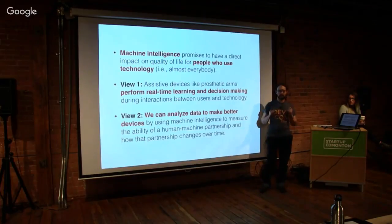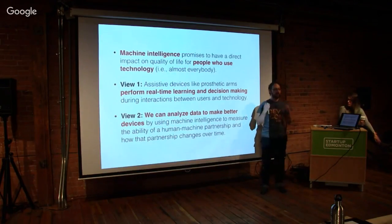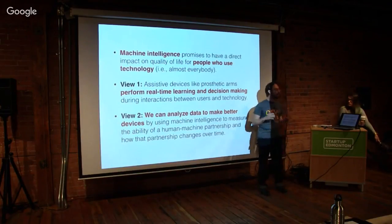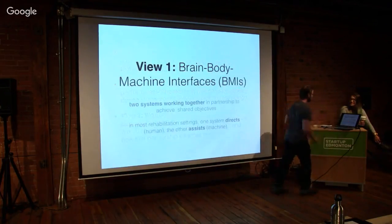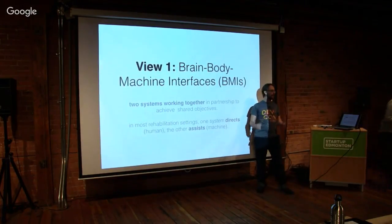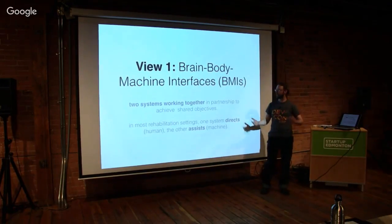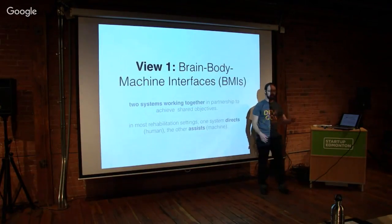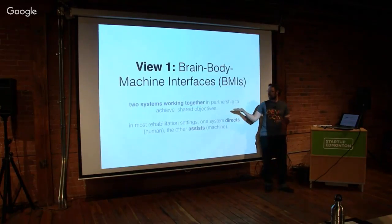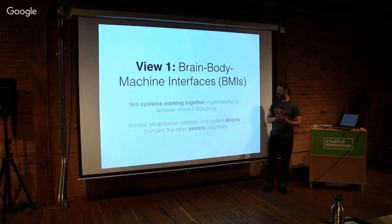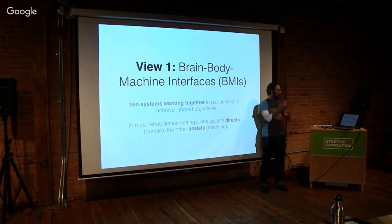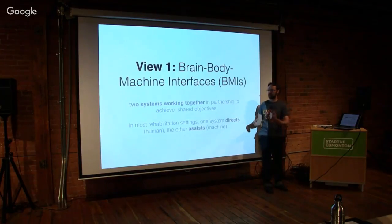I'm going to talk about brain-body machine interfaces. Anytime you have people interacting with technology in an intimate way, like assistive technology in rehab, you have two systems working together in partnership trying to do something together. In most rehab settings, one of those intelligent systems is directing the show — the person — and the machine is assisting, trying to achieve the goals of the director. Here's one example from Pittsburgh: Janet Sherman working in the BrainGate project. Janet is paralyzed from the neck down. Those gray things on her head are plugs directly into two regions of her brain. Just by thinking, Janet controls a robotic arm to feed herself a chocolate bar.